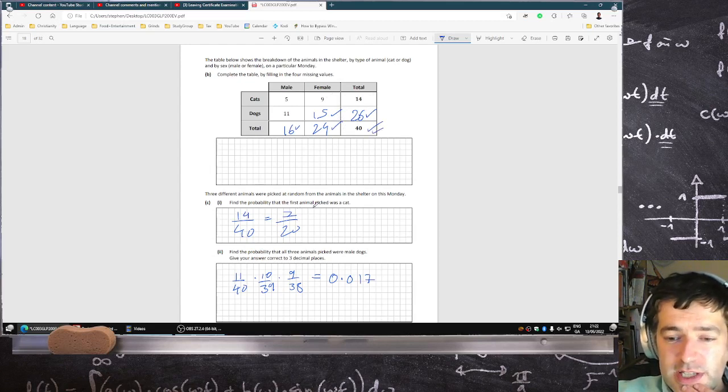Find the probability that the first animal picked was a cat. So there are 14 cats out of 40. That's 14 over 40 or 7 out of 20.